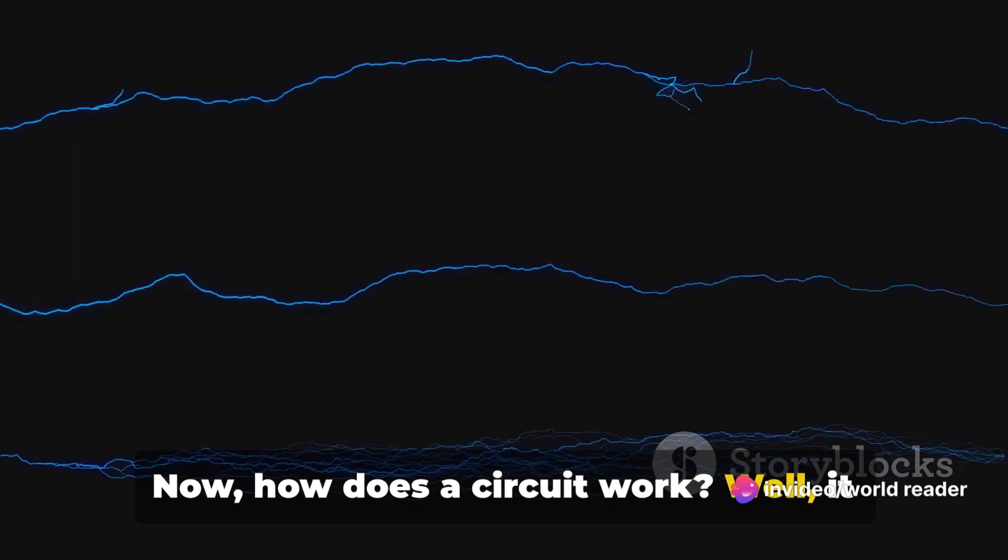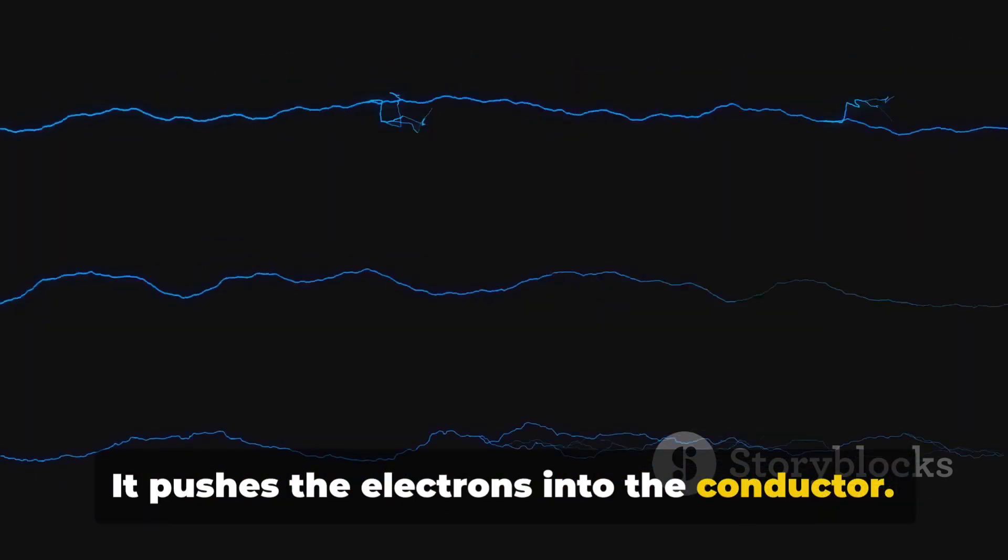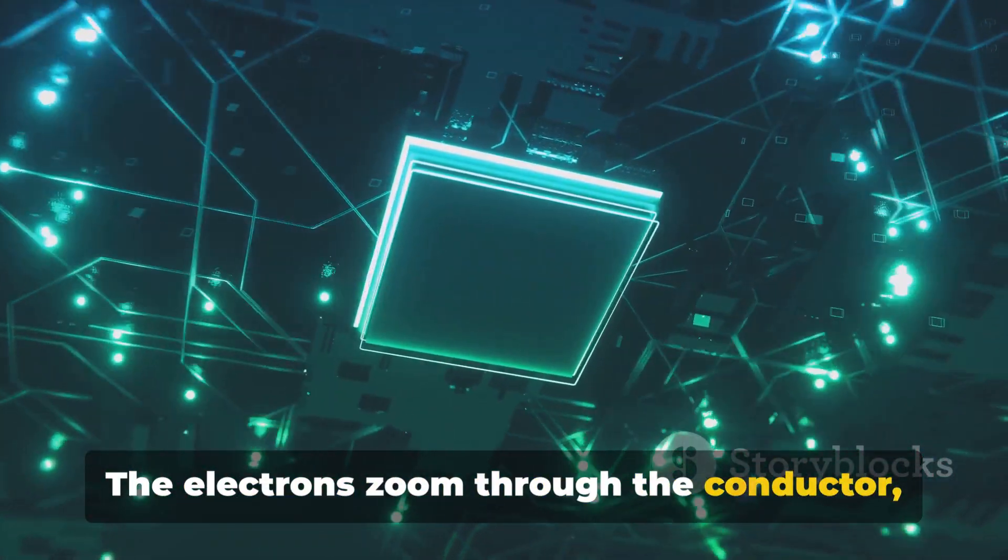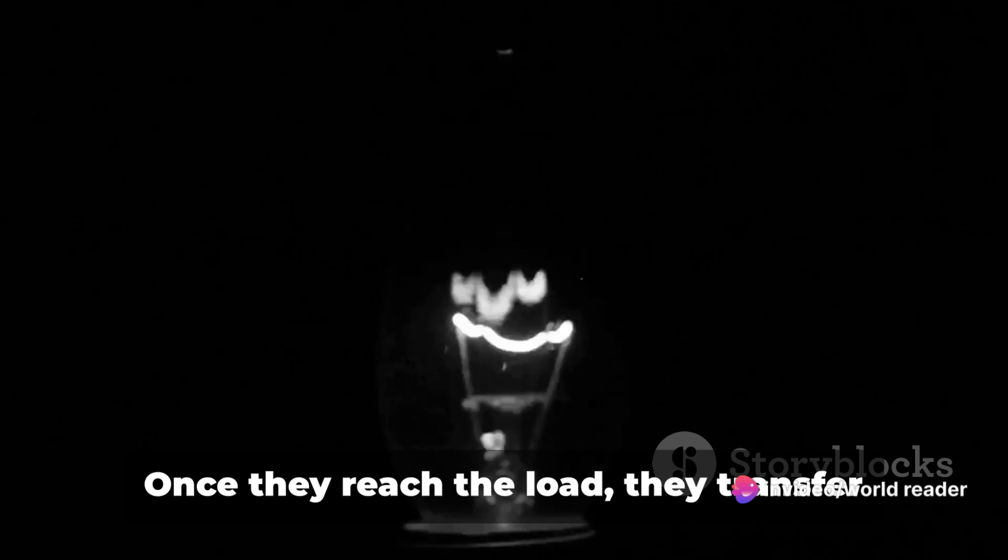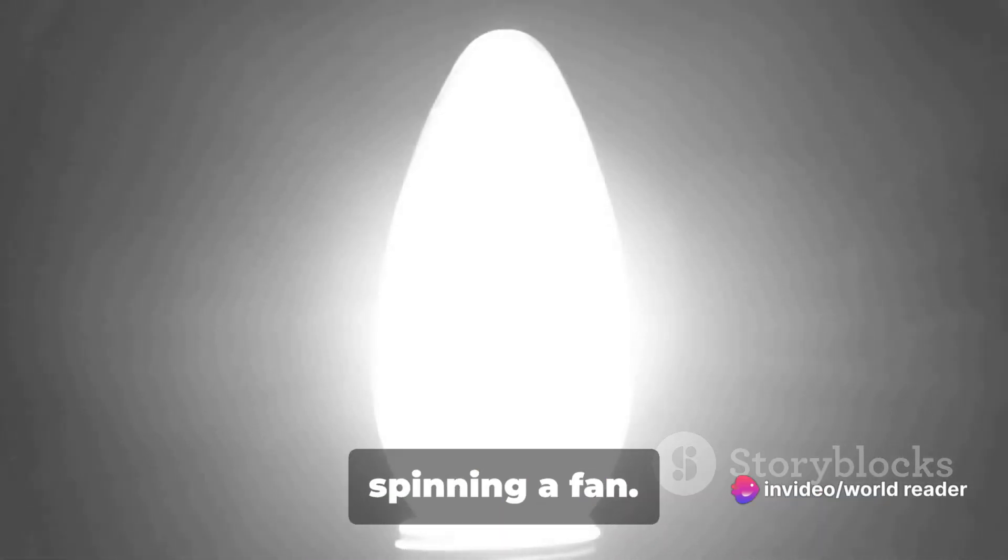How does a circuit work? Well, it all starts with the power source. It pushes the electrons into the conductor. This is where the race begins. The electrons zoom through the conductor racing towards the load. Once they reach the load, they transfer their energy, lighting up a bulb or spinning a fan.